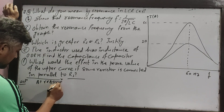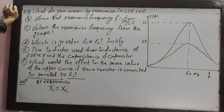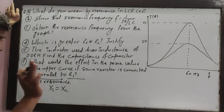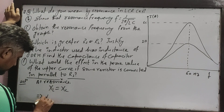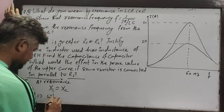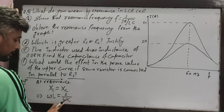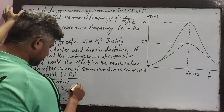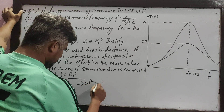At resonance, XL is equal to XC. XL is the inductive reactance equal to omega L, and XC is the capacitive reactance equal to 1 over omega C. So omega squared is equal to 1 by LC.